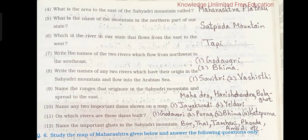12. Name the important ghats in the Sahyadri mountain. Bor, Thal, Tamhani, Fonda, Amboli, etc.